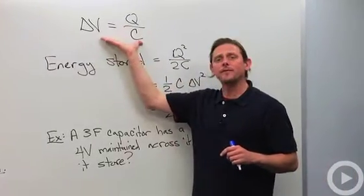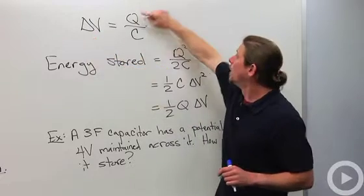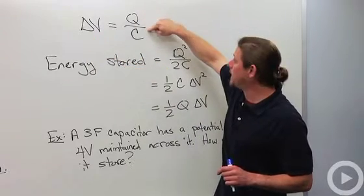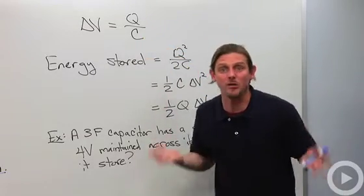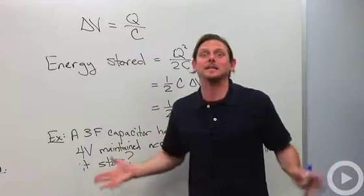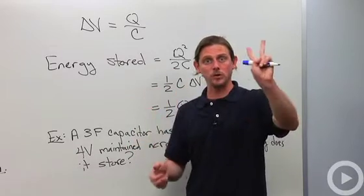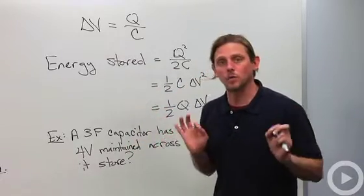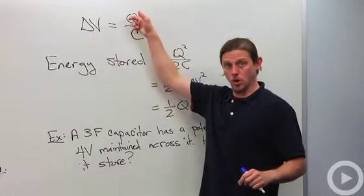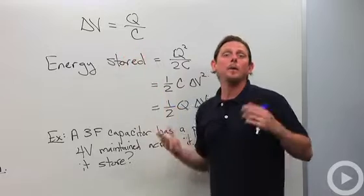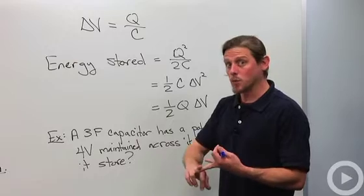From our definition of capacitance, the potential difference across any capacitor is equal to the amount of charge it's holding divided by the capacitance. The neat thing about capacitance is that it's just a geometrical property — like resistance, it doesn't change depending on what situation the capacitor is put in. Charge will change, potential difference will change, but the capacitance remains the same.